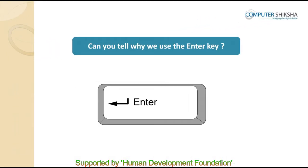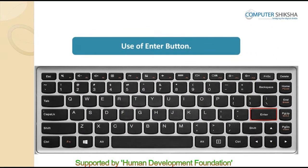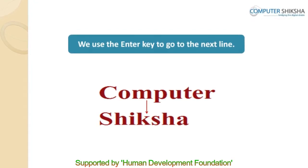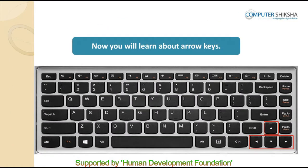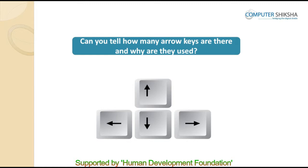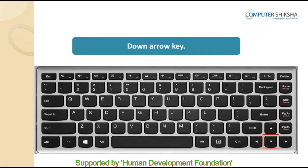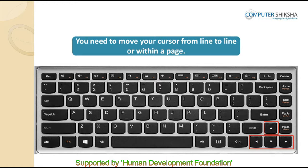Can you tell why we use the enter key? We use the enter key to go to the next line — if we want to move from the current line to the next line, we will use the enter key. Now, can you tell how many arrow keys there are and why they are used? There are four arrow keys called left, right, up, and down. Arrow keys are used to move your cursor from line to line or within a page or document as per your requirement.